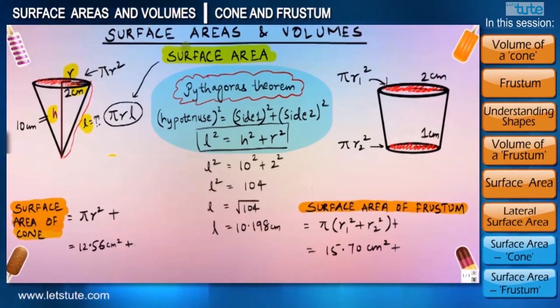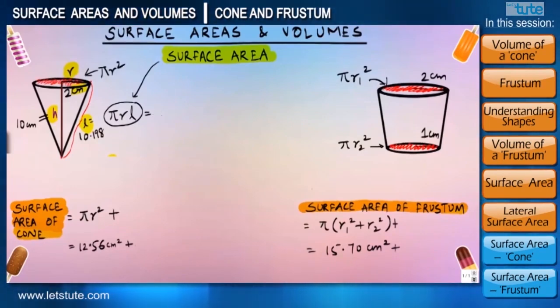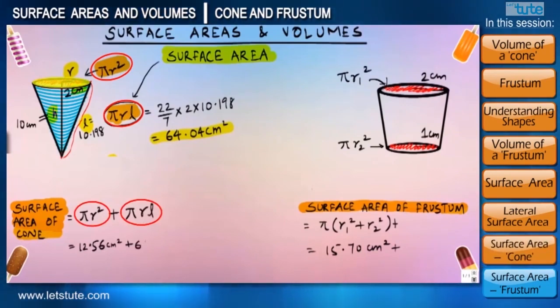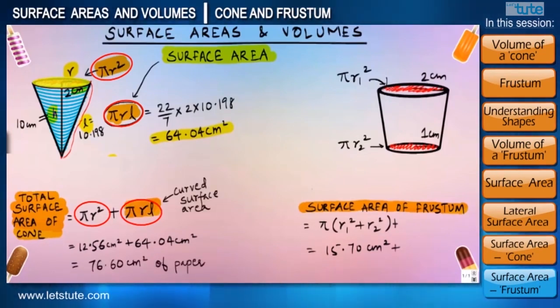So by using the same, we can find the slant height first, which will come out to be 10.2 centimeter in this case. And then eventually we can use the slant height for calculating the curved or lateral surface area, which will come out to be 64.04 centimeter square. That means for covering an entire cone we need 64.04 plus 12.56 centimeter square of paper, which will come out to be 76.60 centimeter square. So combining the area of upper circle and the lateral surface, we can get the total surface area of a cone.